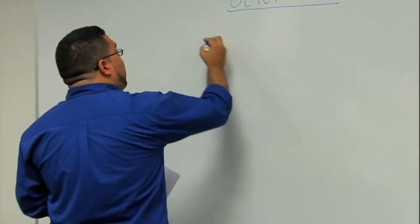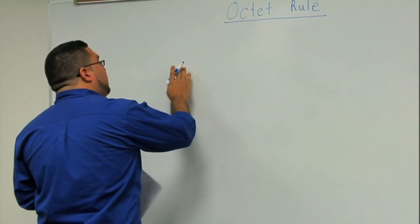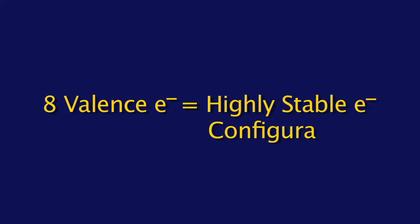So let's take a look at this principle again. How many electrons did we need in order to be highly stable? We need 8 valence electrons. And if you have 8 valence electrons, that will give you a highly stable electron configuration.